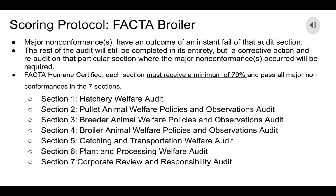Back to American Humane Certified: each section must receive a minimum of 79% and pass all major non-conformances in the seven sections. Section one includes the hatchery welfare audit. Section two includes pullet animal welfare policies and observation audits. Section three: breeder animal welfare policies and observation audit. Section four: broiler animal welfare policies and observation audit. Section five: catching and transportation welfare audit. Section six: plant and processing welfare audit. Section seven: corporate review and responsibility audit.